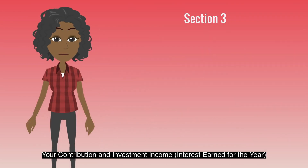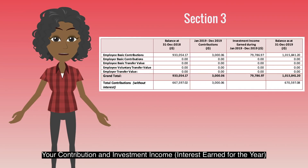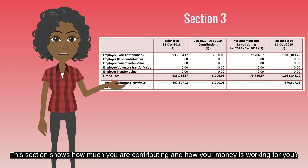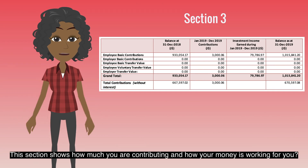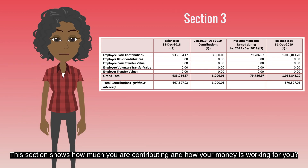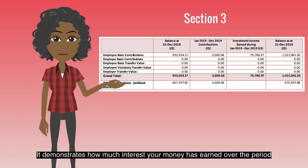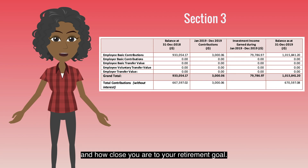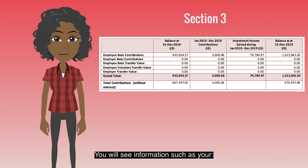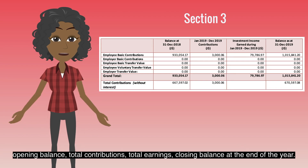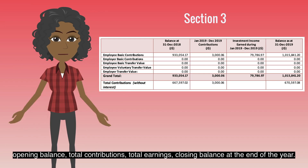Section 3 covers your contribution and investment income, and the interest earned for the year. This section shows how much you're contributing and how your money is working for you. It demonstrates how much interest your money has earned over the period and how close you are to your retirement goal. You will see information such as your opening balance, total contributions, total earnings, and closing balance at the end of the year.